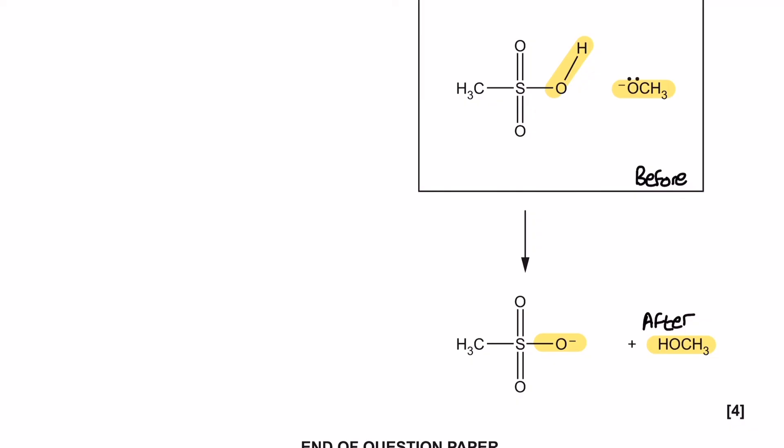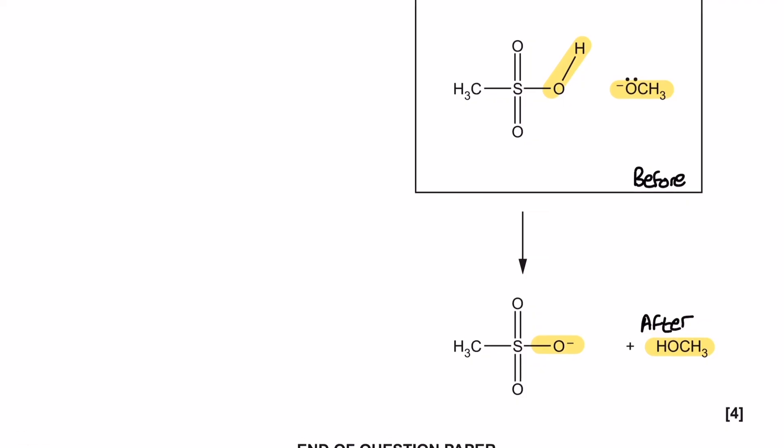The lone pair in the before box is a massive clue of what needs to happen because we know that a curly arrow from the specification shows the movement of an electron pair, and we know that this oxygen is going to pick up a proton. So what I'm going to do is use a curly arrow to pick up this proton just there. We could consider ourselves to be finished at this stage, but not quite.